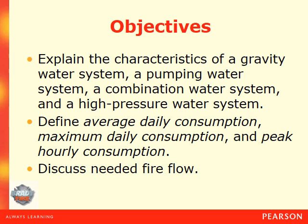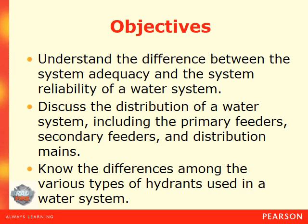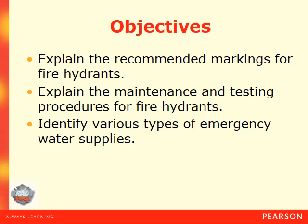Objectives: explain the characteristics of a gravity water system, a pumping water system, a combination water system, and a high pressure water system. Define average daily consumption, maximum daily consumption, and peak hourly consumption. Discuss needed fire flow, understand the differences between system adequacy and system reliability, discuss the distribution of a water system including primary feeders, secondary feeders, and distribution mains. Know the difference among the various types of hydrants, explain the recommended markings for fire hydrants, explain maintenance and testing procedures for fire hydrants, and identify various types of emergency water supplies.